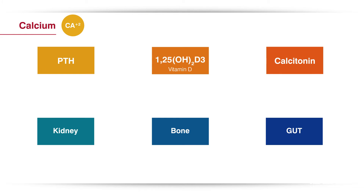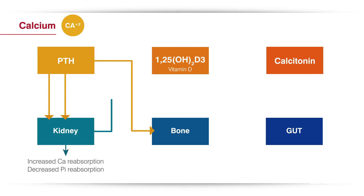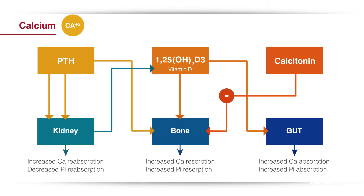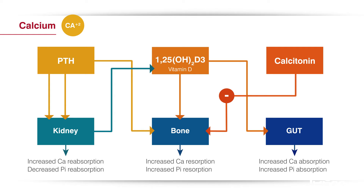The other electrolyte we'd like to look at is calcium. Calcium is pretty complicated because the serum calcium concentration is regulated by three hormones — parathyroid hormone, calcitriol (which is active vitamin D), and calcitonin — acting together on three different organ systems: the kidney, the bone, and the gastrointestinal tract. Those three hormones acting on those three organs regulate the serum calcium concentration.